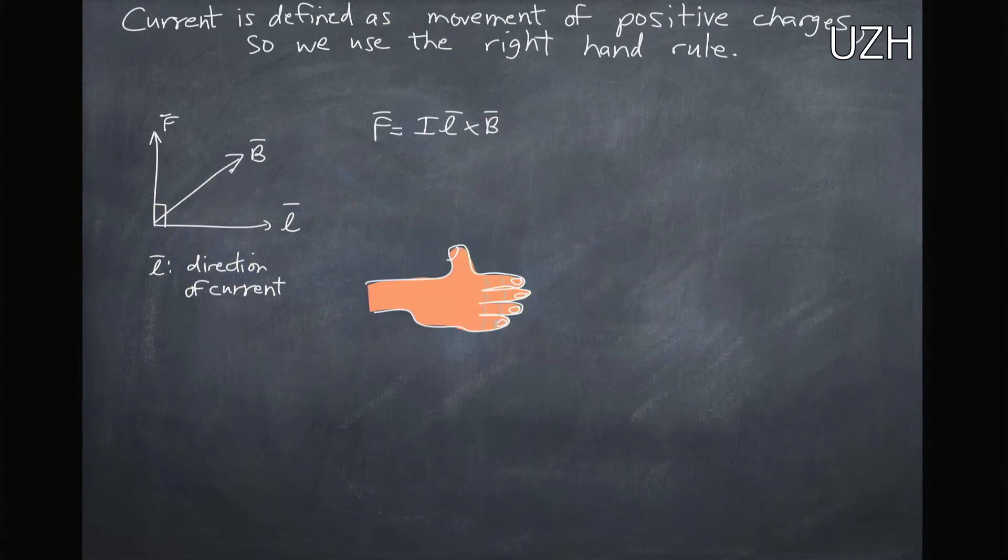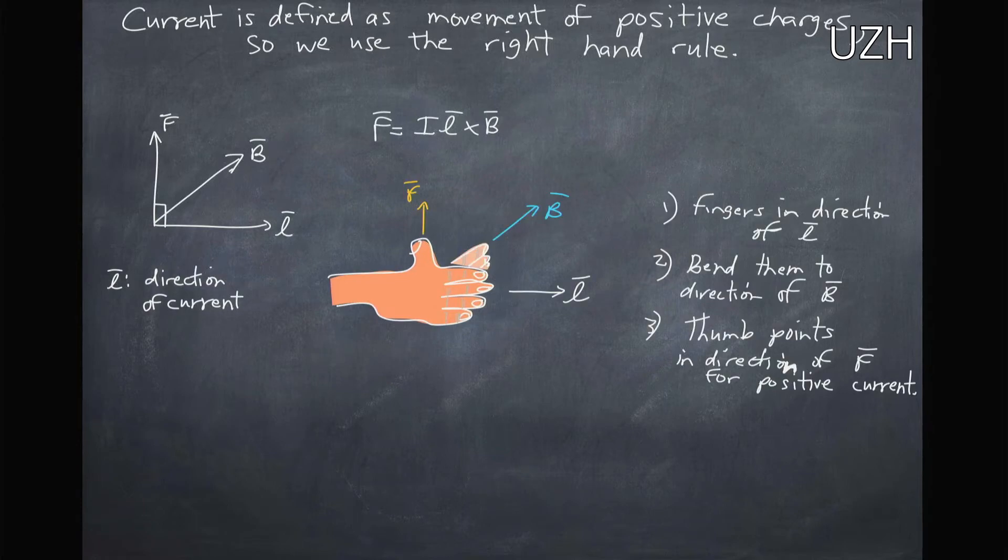So current is defined as the movement of positive charges, so we can use our right hand rule for this. We can take our hand, point our fingers in the direction of the current, this L vector. We can bend them in the direction of the magnetic field, and the force will point perpendicular to both the current and the magnetic field.